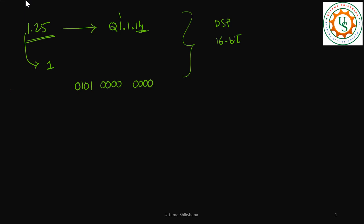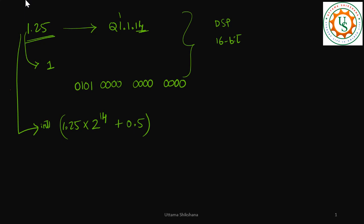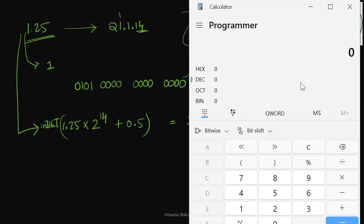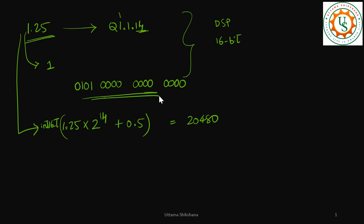So how do we verify this? I was explaining the float-to-fix formula from the previous video. To convert into Q1.1.14, I need to multiply by 2 to the power of 14, then add 0.5, within 16 bits. If I do this I get 2480. So now you take the calculator, go to decimal, type 2480, and you will see the 16-bit number — and that will be the same as what is shown here.